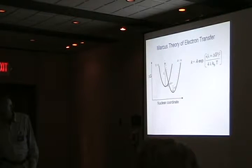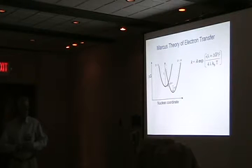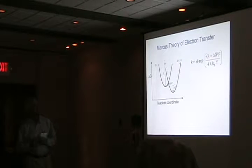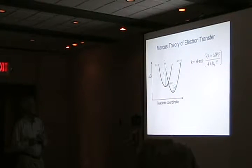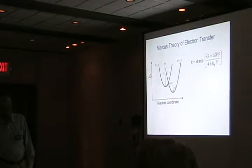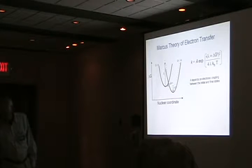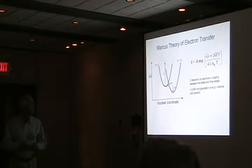When designing these systems, we use Marcus theory as a basic guiding principle, which works very well for molecular systems. You have to modify it a little when talking about transferring at surfaces and so forth. Just to remind you: the rate constant for electron transfer depends on a pre-exponential A — I'll say more about that in a moment — and it depends on lambda, the reorganization energy.